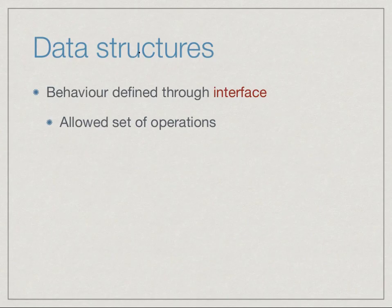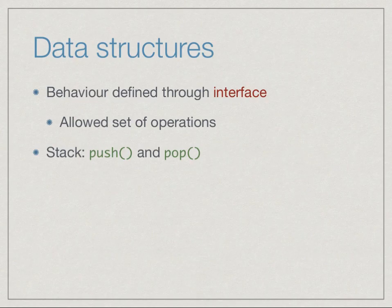Let's revisit what we mean by a data structure. A data structure is an organization of information whose behavior is defined through an interface. An interface is the allowed set of operations. For instance, for a stack, the allowed set of operations are push and pop. We can also query whether a stack is empty or not.